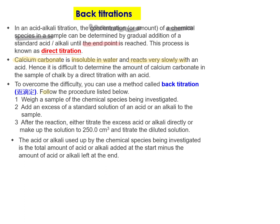Now here are the steps. I will use calcium carbonate as an example to illustrate how we can do the back titration. First of all, we need to weigh a sample of the chemical species before the investigation. So for the first step, you need to find out the mass of chalk. Then you add excess standard solution of an acid or alkaline to the sample. In this case, you have chalk and then you add excess acid to do the reaction.